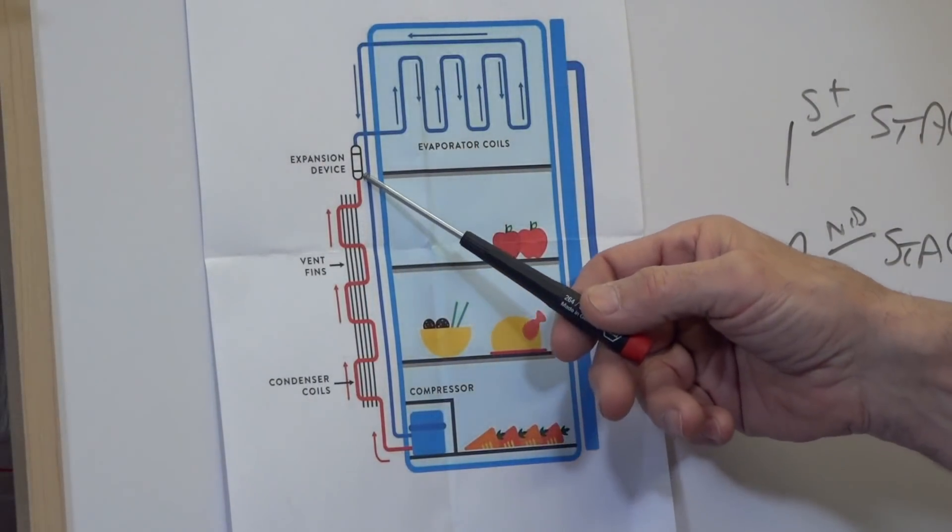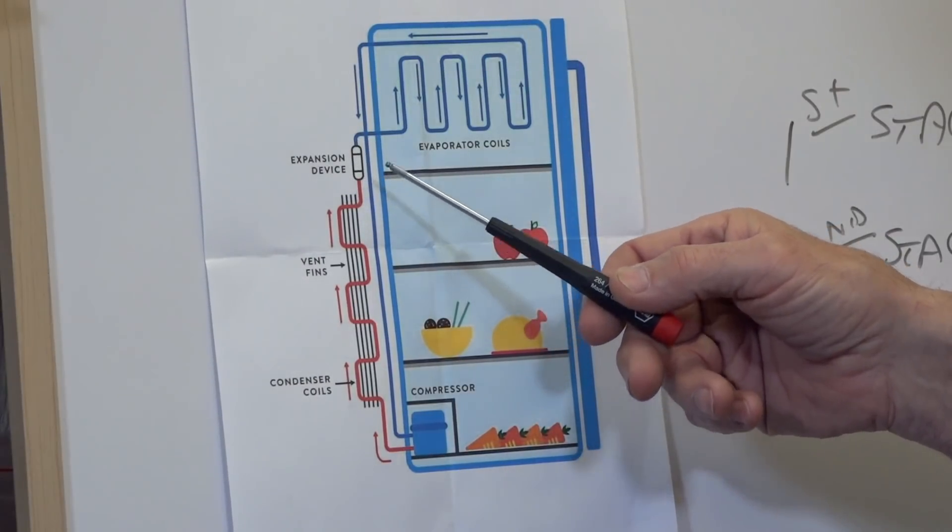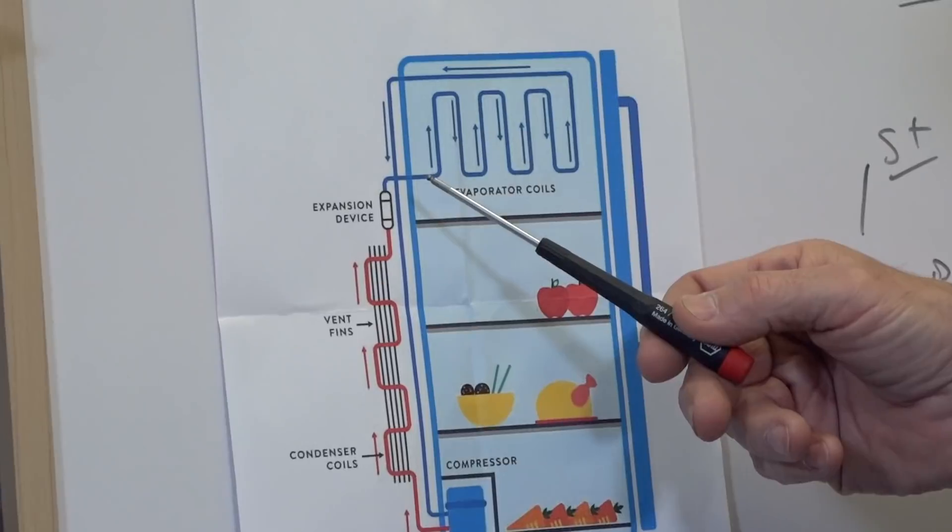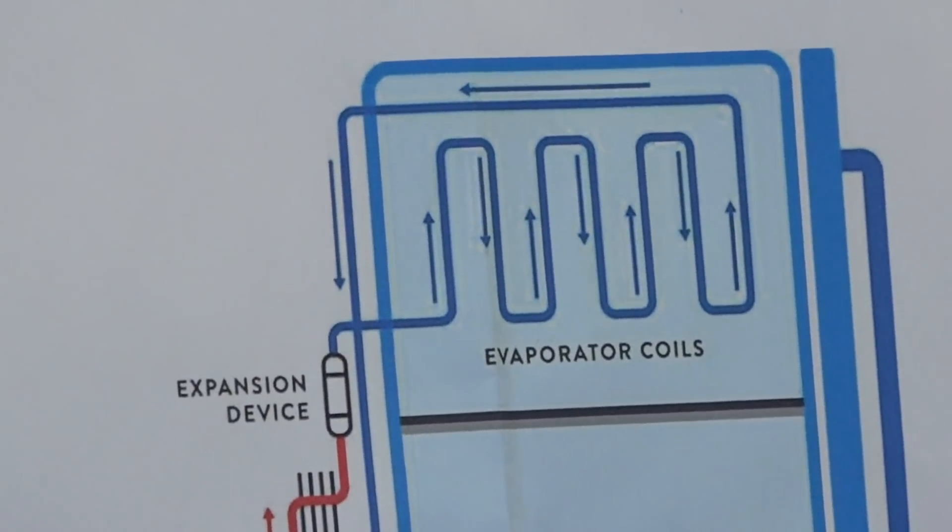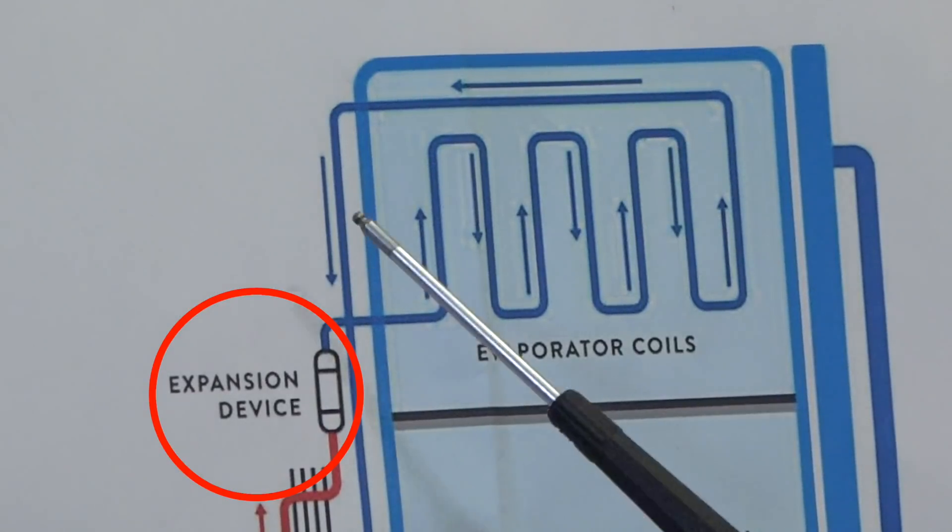Okay? And it's delivering that high pressure up to this thing right here. Can you see that, Kevin? It says expansion device. Expansion device. What the heck is that? Change that. Call that regulator. That's what it is.